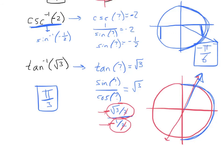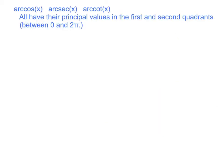In summary, the principal values of arc sine, arc cosecant, and arc tangent are always in the first and fourth quadrants — between -π/2 and +π/2. Similarly, the other three inverse trig functions — arc cosine, arc secant, and arc cotangent — all have their principal values in the first and second quadrants. I think of these as cosine-based: arc cosine is cosine itself, secant is 1 over cosine, and cotangent is cosine over sine. So with cosine-based inverse trig functions, the principal value is in the first or second quadrant.